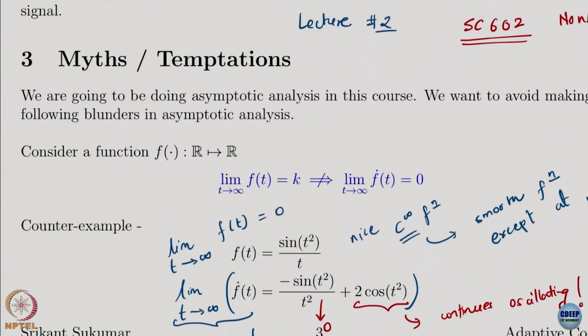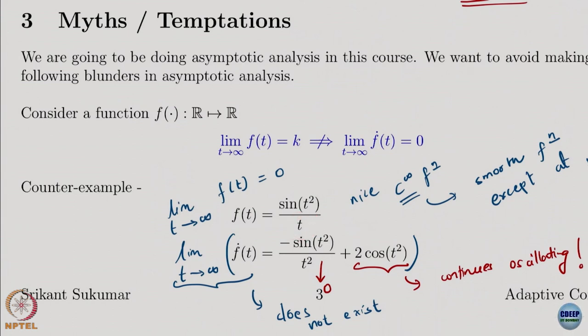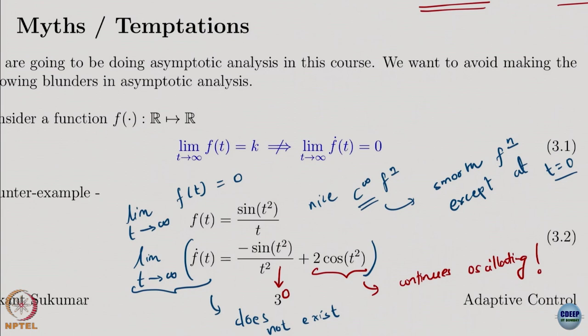Here is a very easy example. Consider the function sin(t²)/t. If you take the limit as t goes to infinity, this goes to 0 — the numerator oscillates between −1 and +1 while the denominator grows to infinity linearly, so the ratio definitely goes to 0. Also, this is a pretty smooth function everywhere except at t = 0, but since we are talking about t going to infinity, we do not worry about behavior at t = 0.